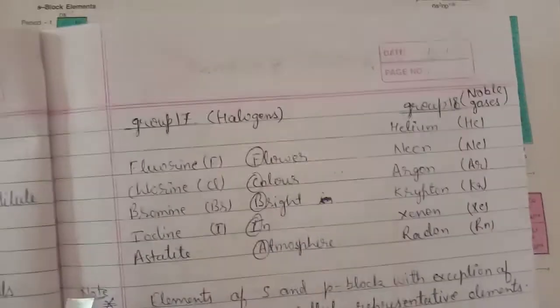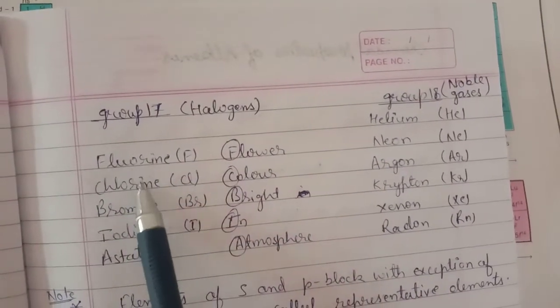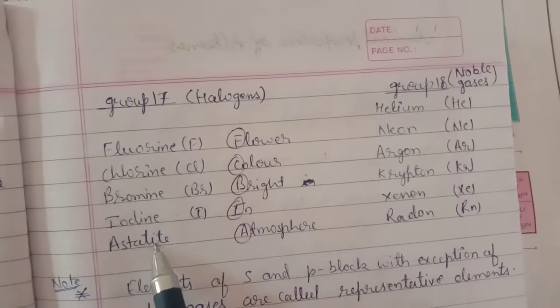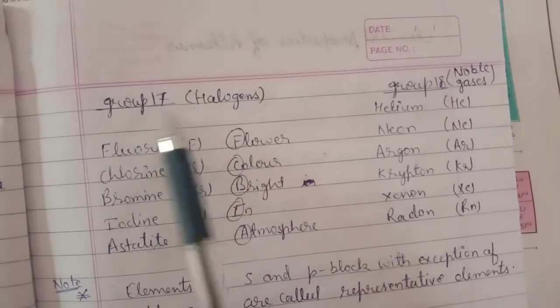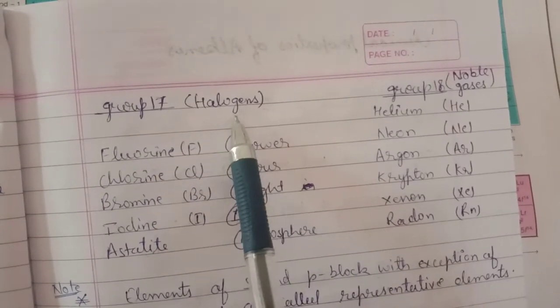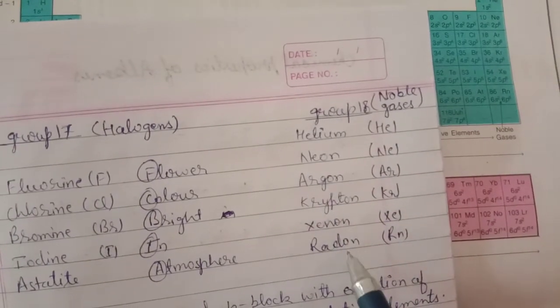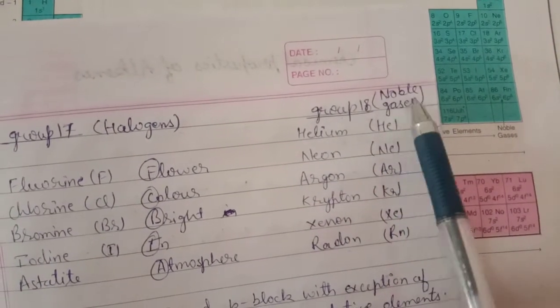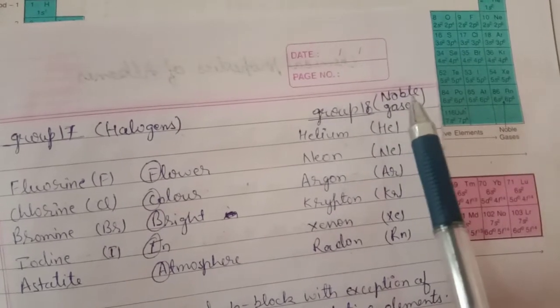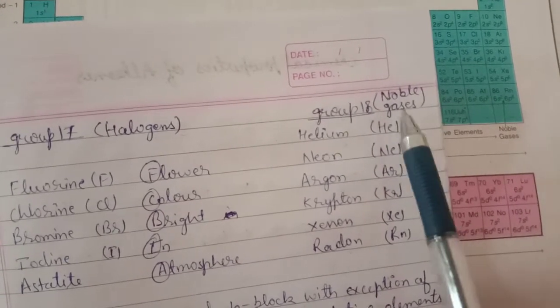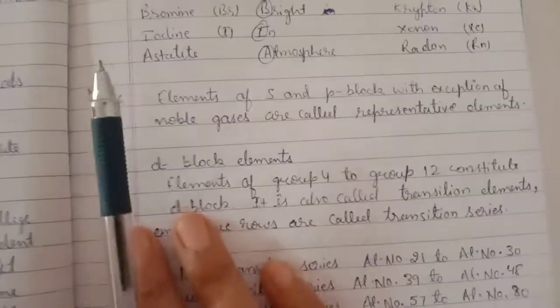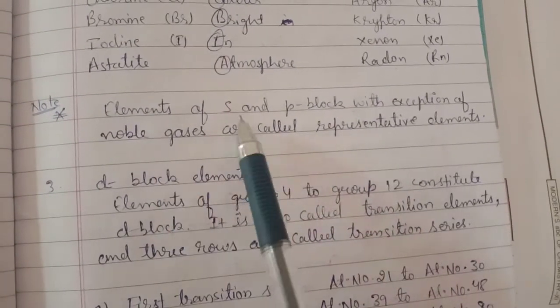Next is group number 17: fluorine, chlorine, bromine, iodine, and astatine. This group is called halogens. Group 18 contains helium, neon, argon, krypton, xenon, and radon. This group is called noble gases or inert gases.